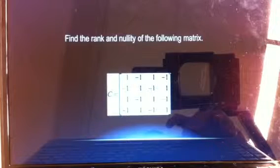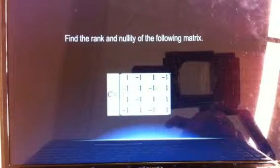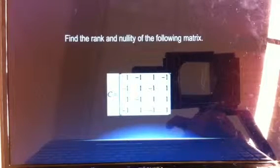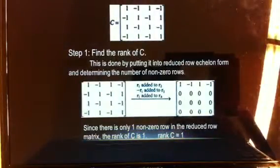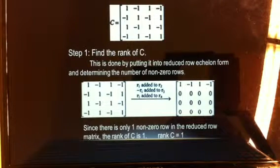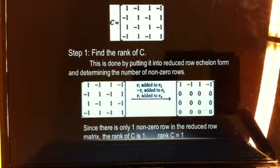So, to find the rank and nullity of the following matrix we first want to find the rank because if we don't have the rank, we cannot tell the nullity. We will put it into reduced row echelon form and determine the number of non-zero rows.